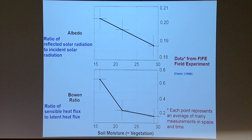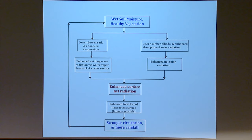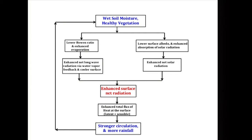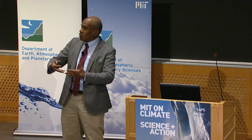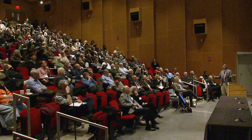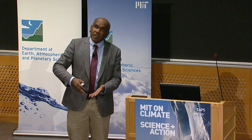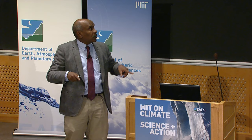I put this understanding into a simplified framework of how the land surface shapes rainfall distributions and circulation. Both the lowering of the Bowen ratio and the lowering of surface albedo work through the radiation balance to enhance net surface radiation over land. Unlike the ocean — where heat can be transported laterally — land is solid, so net surface radiation over land dictates the total flux of heat, the energy in the boundary layer, and ultimately the occurrence of rainfall and circulation development.